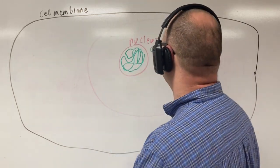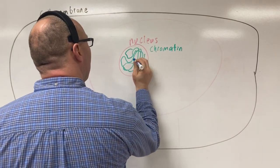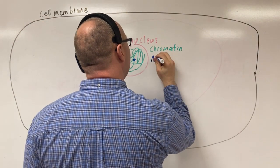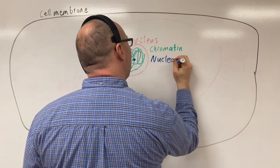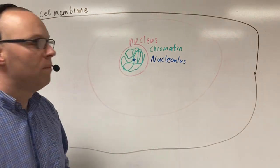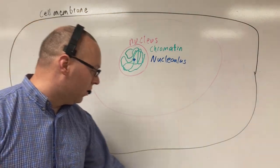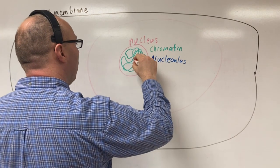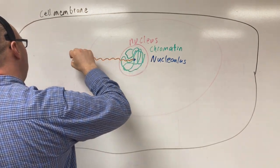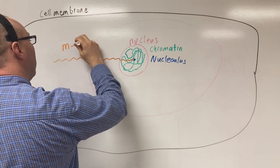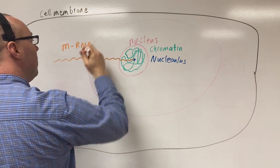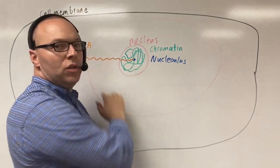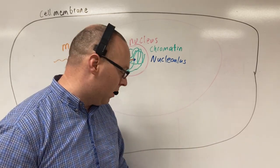In the center of the nucleus, I'm going to draw this dark spot — that is your nucleolus. The reason it's there is we're actually reading the DNA and making something called mRNA. Your mRNA, short for messenger RNA, is the message from the nucleus to the cell — hey, this is the protein that we're looking at making.